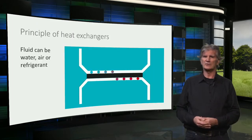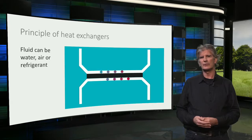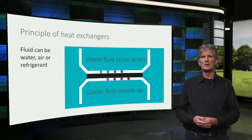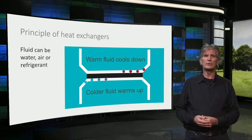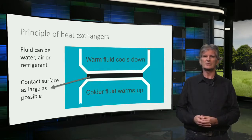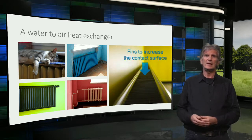What is a heat exchanger and how does it work? This scheme illustrates the general principle of a heat exchanger. Heat is transferred from one fluid — a liquid like water or a gas like air — to another fluid, without the two fluids being in direct contact. The warm fluid cools down while the colder fluid warms up. To facilitate a good heat exchange, the contact surface is increased as much as possible. There are several different types of heat exchangers used in buildings. Actually, a convector or radiator for heating is also a heat exchanger — in this case, a water-to-air heat exchanger. And here you can see how the heat exchange surface is increased by using convector fins.